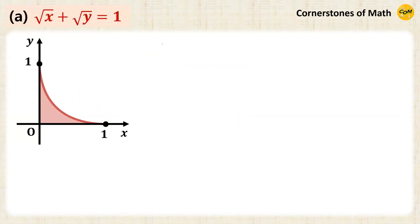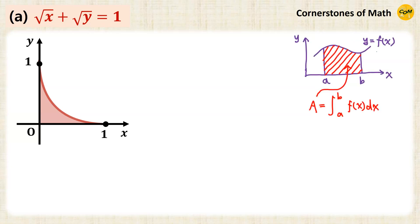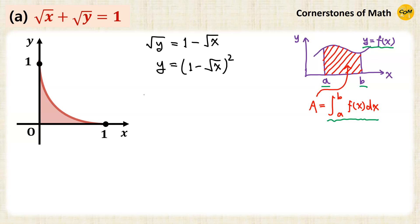The first one: square root of x plus square root of y equals 1. We can calculate the area under a curve y equals f(x) from x equals a to x equals b by the following formula. The area A is given as the integral of f(x) dx from a to b. So let us express our equation of the graph in y equals f(x) form. So square root of y equals 1 minus square root of x, so y equals (1 minus square root of x) squared. Therefore, the area is given as the integral from 0 to 1 of (1 minus square root of x) squared dx.